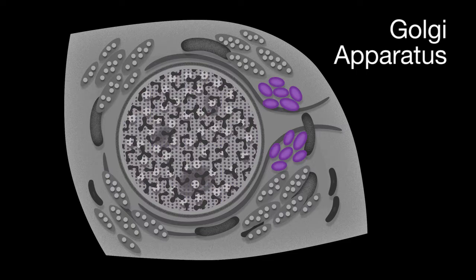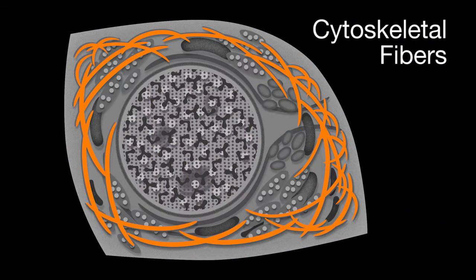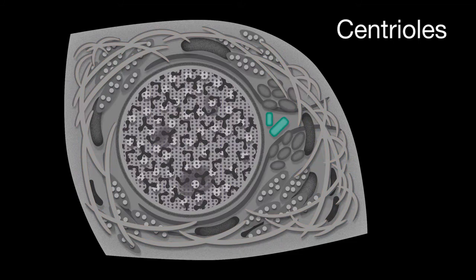Golgi apparatus will display coarse speckled staining of the cytoplasm adjacent to one side of the nucleus. Cytoskeletal fibers will display staining of filamentous fibers in the cytoplasm. Centrioles will display staining of one to two discrete fluorescent dots in the cytoplasm.